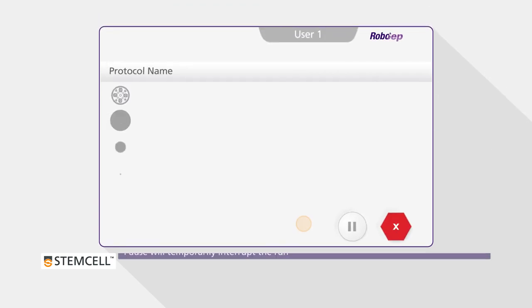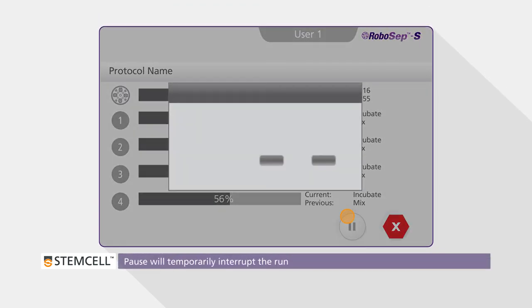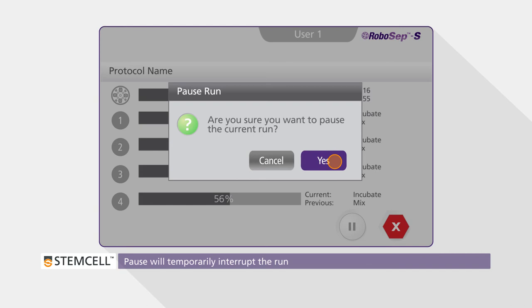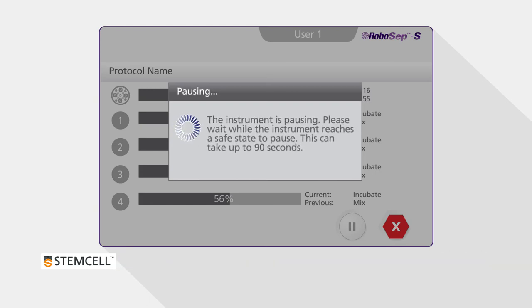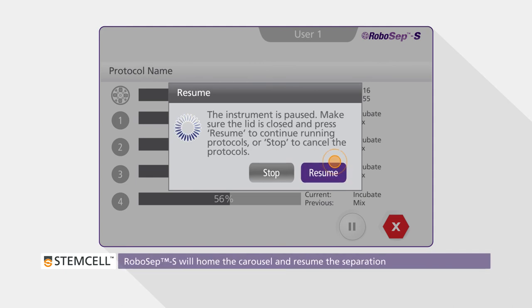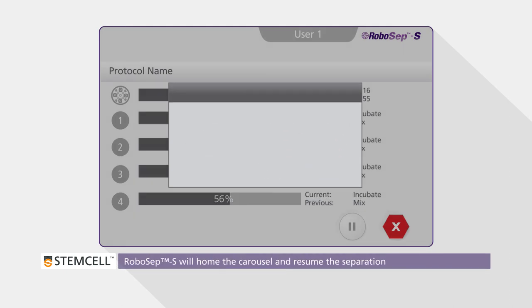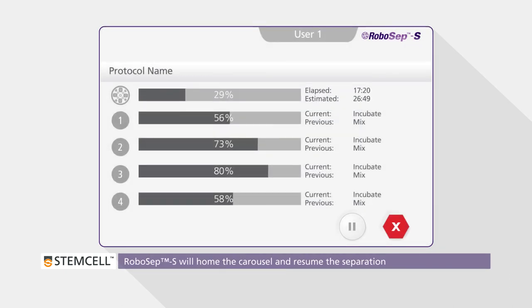If for some reason you need to pause the instrument, press the pause button. If you press the pause button, the run will be interrupted as soon as it completes the current action. To resume the run, press Resume. The RoboSep will re-home and continue the run at the next scheduled action.